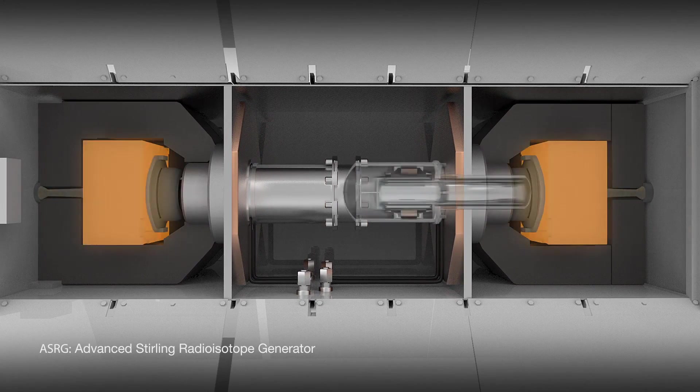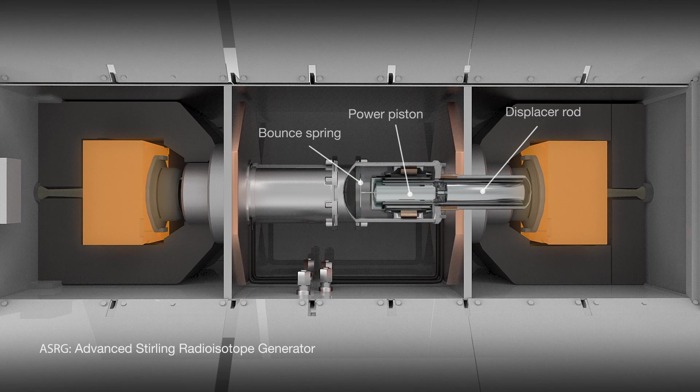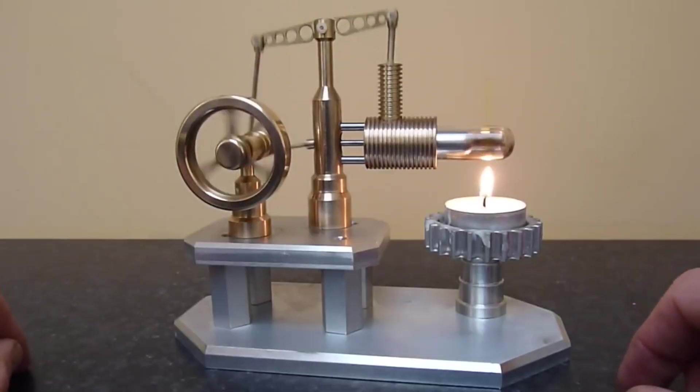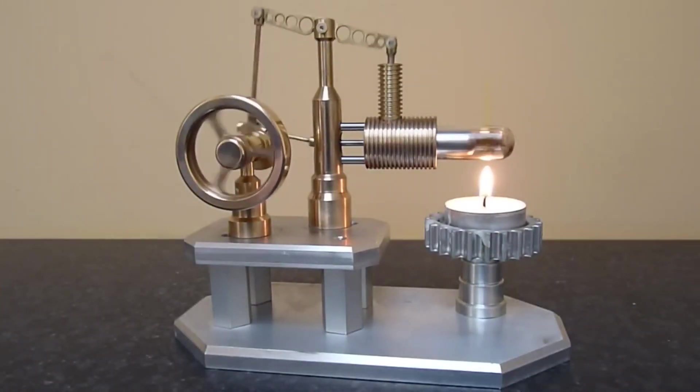NASA proposes to use a radioisotope heat source in conjunction with a so-called Stirling engine, capable of converting thermal energy into mechanical energy, and then this mechanical energy will be converted into electricity using conventional electromechanical generators.